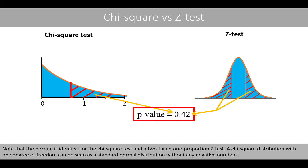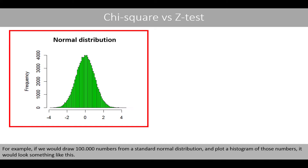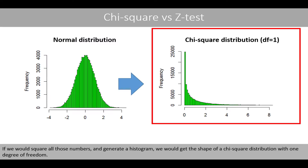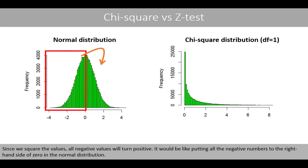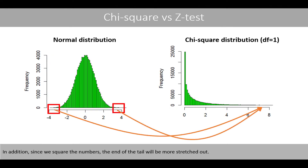A chi-square distribution with one degree of freedom can be seen as a standard normal distribution without any negative numbers. For example, if we draw 100,000 numbers from a standard normal distribution and plot a histogram of those numbers, it would look something like this. If we then square all those numbers and generate a histogram, we would get the shape of a chi-square distribution with one degree of freedom. Since we square the values, all negative values will turn positive — it would be like putting all the negative numbers to the right-hand side of zero in the standard normal distribution. In addition, since we square the numbers, the end of the tail will be much more stretched out.